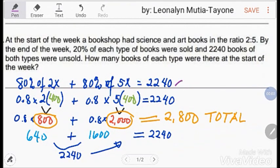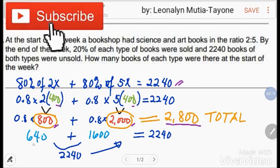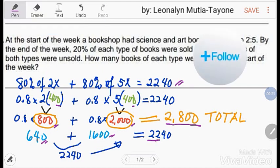I-summarize lang natin. Ito yung equation. Ito naman, ang value ng x, 400. Sa tanong na ilan at the start, ang each type: 800 sa science, 2,000 sa art, total of 2,800. Tapos, ilan ang natira sa each type: 640, 1,600, at ang total niyan ay 2,240.